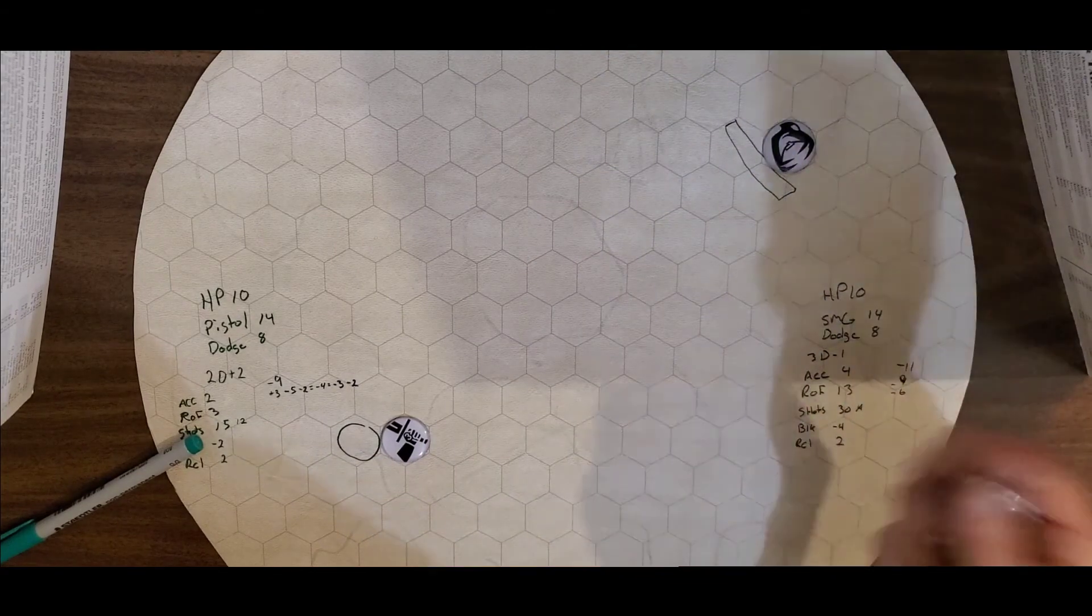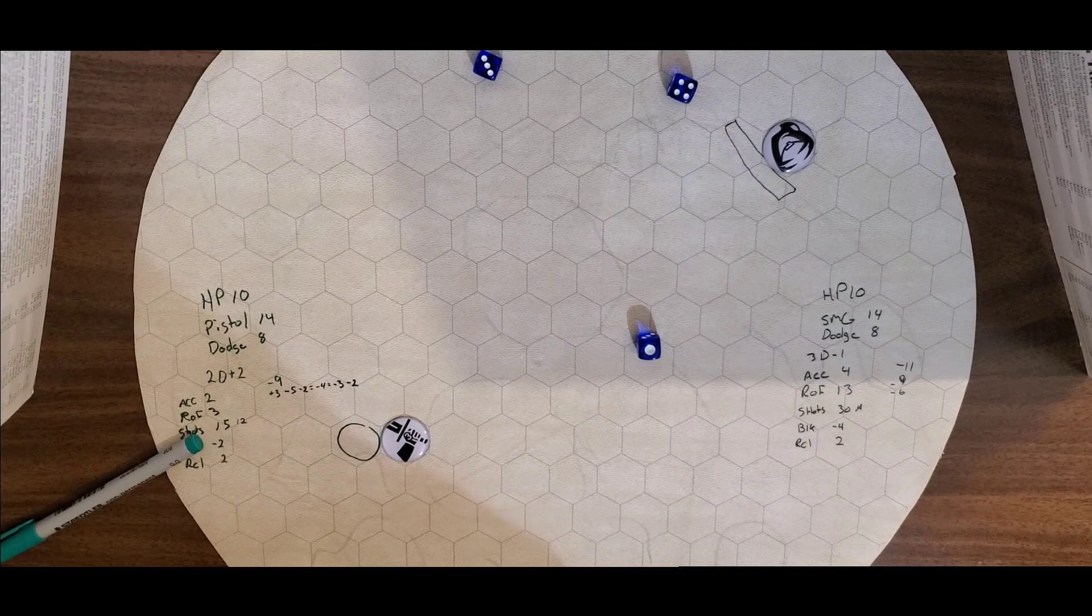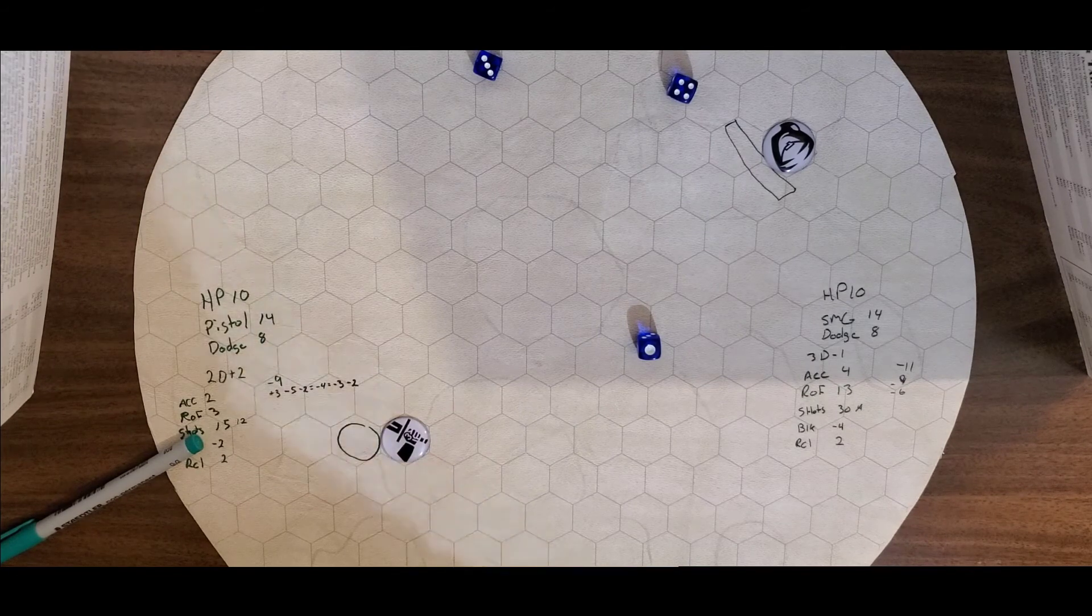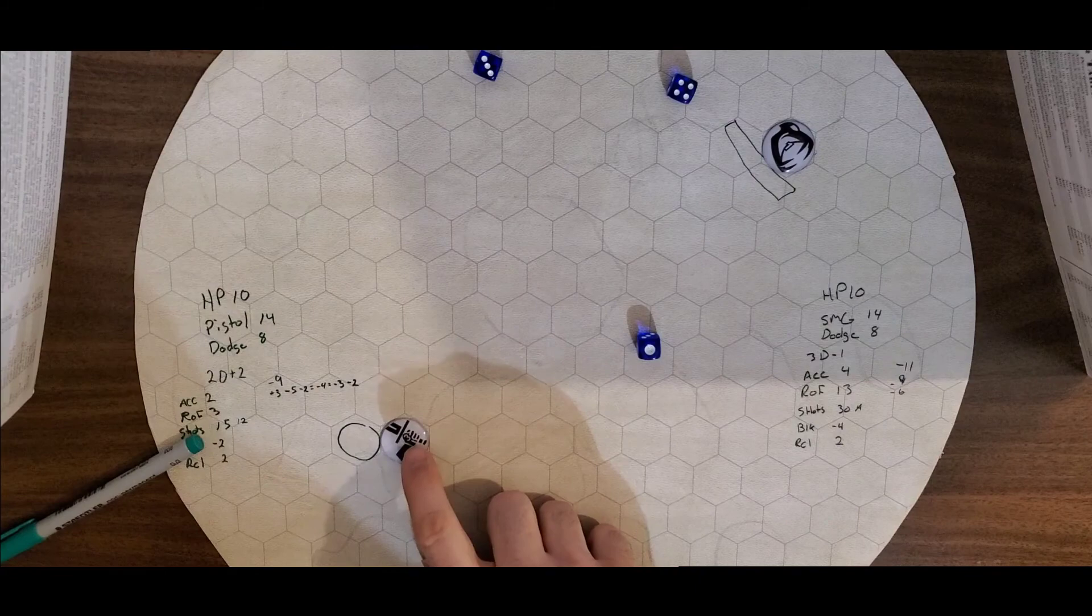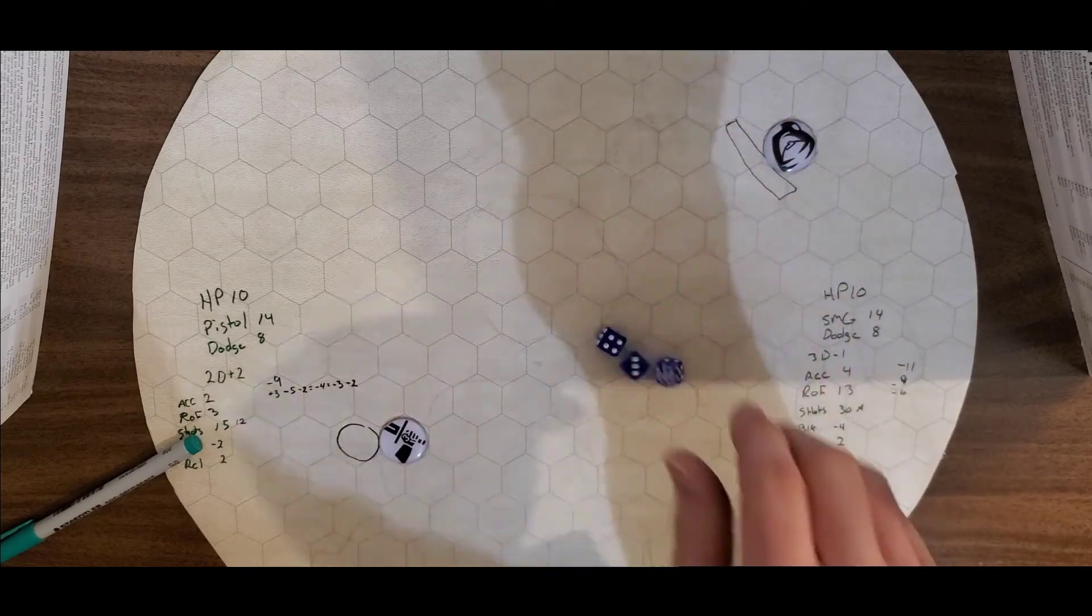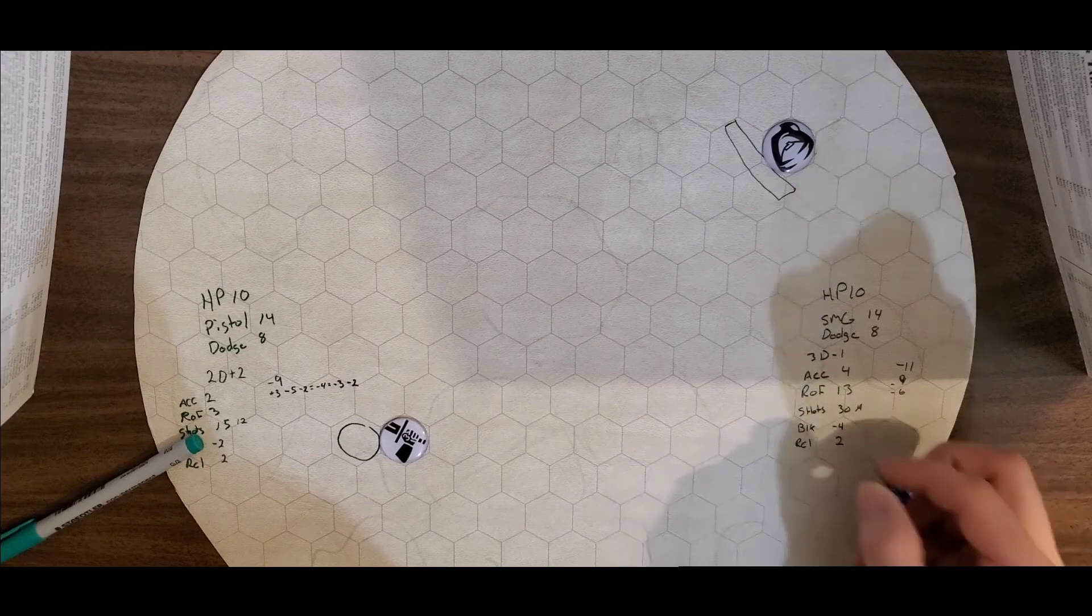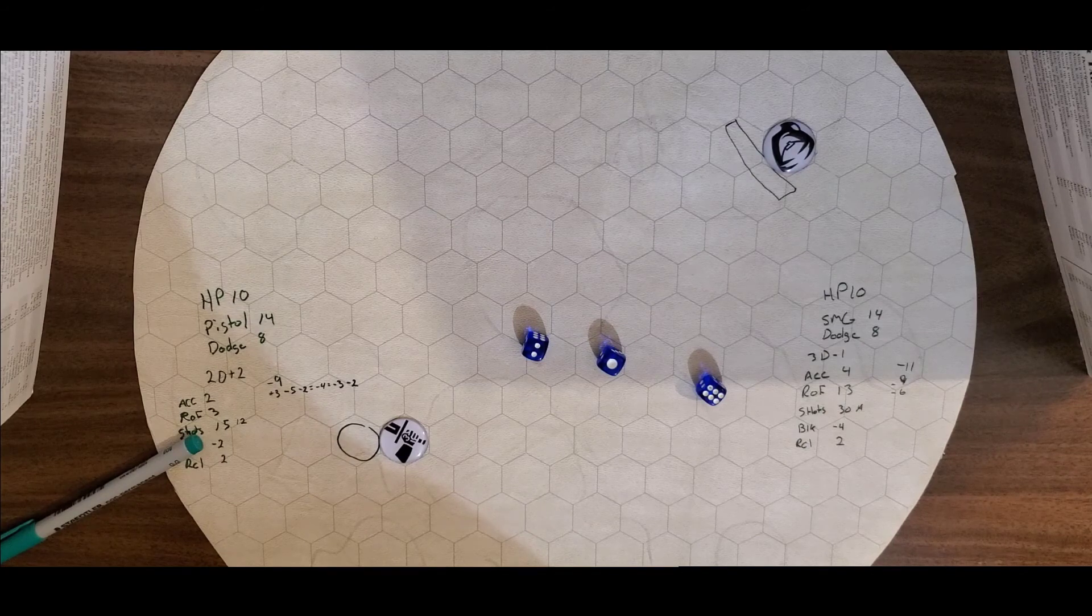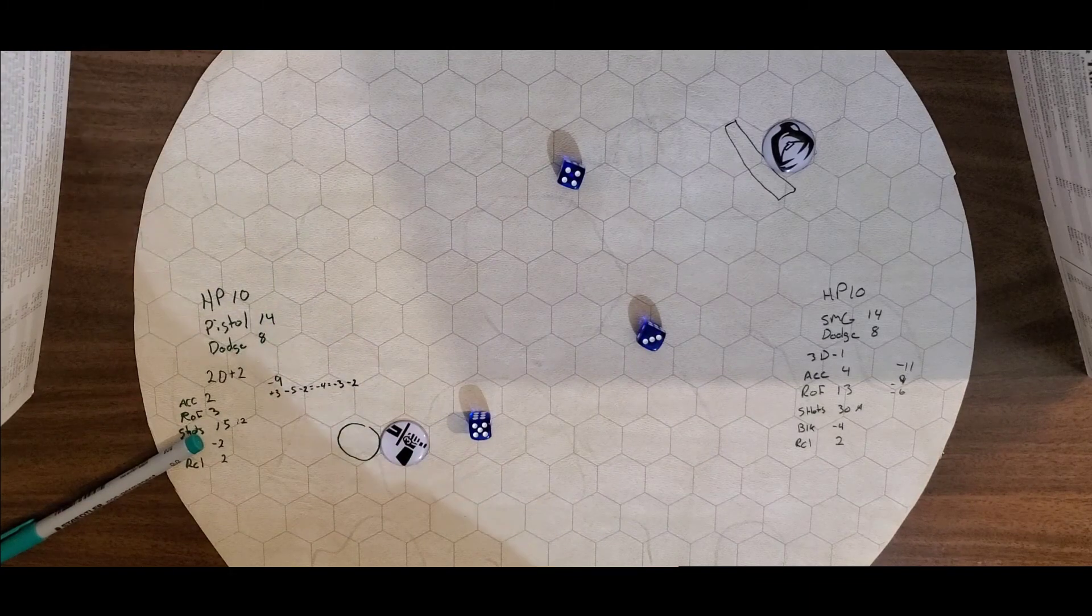This guy's gonna drop and dodge. Dodge and drop. Drop and dodge. He does it. He needed an eleven. Oh, his dodge is halved because he's so injured. Eight eleven, he needed a five. He doesn't do it. He doesn't get down in time. And this guy nails him with three rounds. Twelve. And that's twenty more damage for this guy. Let's see if he's gone. Yeah, he dies. He outright dies, right there.